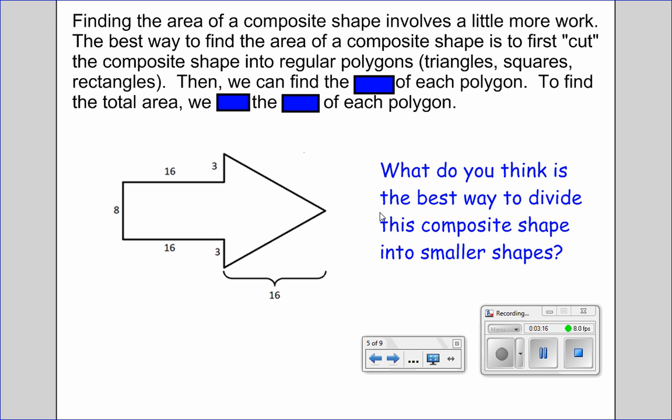Could you figure out what the missing words were? So what we have to do is find the area of each polygon. And then to find the total area, we add the area of each polygon.